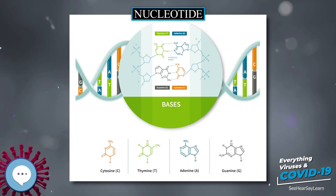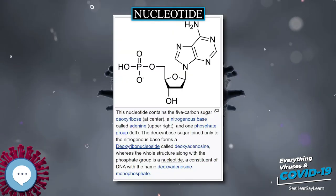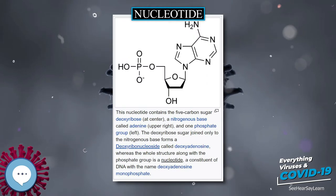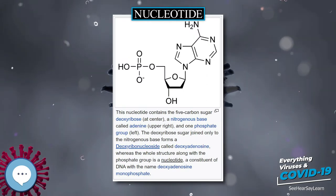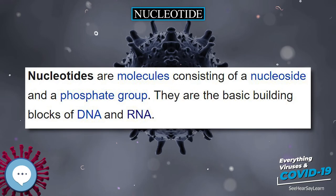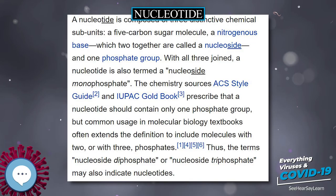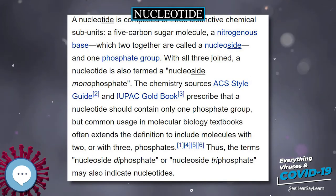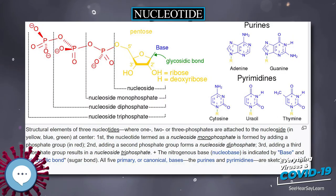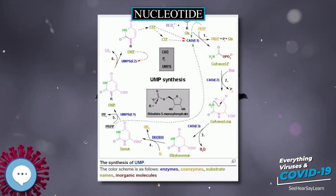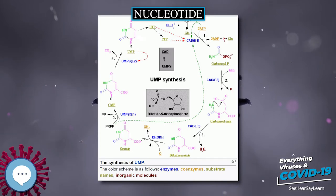Nucleotides can be synthesized by a variety of means both in vitro and in vivo. In vitro, protecting groups may be used during laboratory production; a purified nucleoside is protected to create a phosphoramidite, which can then be used to obtain analogs not found in nature or to synthesize an oligonucleotide. In vivo, nucleotides can be synthesized de novo or recycled through salvage pathways.